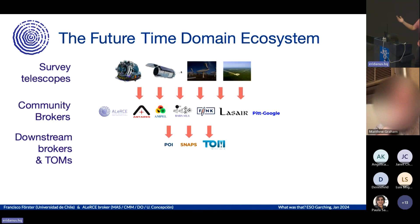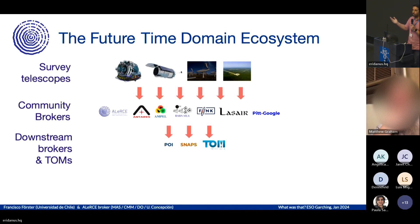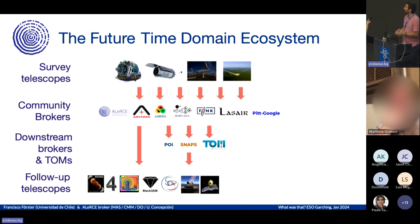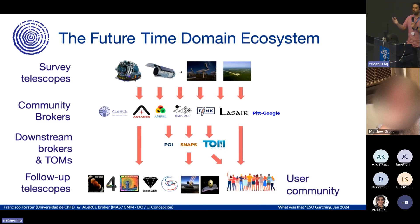Brokers will filter, annotate, and classify these alerts, and will send an output stream to downstream data. Brokers will send information also to follow-up telescopes as well as other brokers. We will also talk to the user community in real time and also for post-processing or access to all the data.